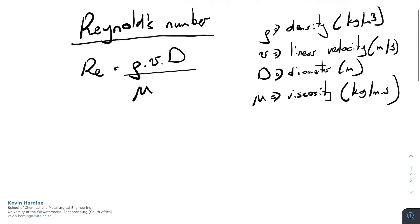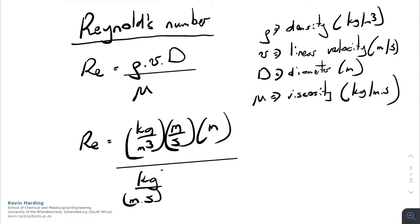When we look at the units of the Reynolds number, we can rewrite the Reynolds number with the units. So that's density, kilograms per meter cubed, multiplied by meters per second of the velocity, meters for the diameter, divided by kilograms per meters second. If we now try and simplify this, we will see that there is one kilogram which cancels.